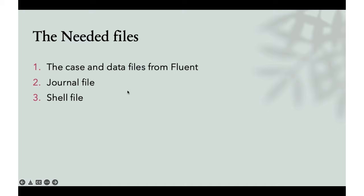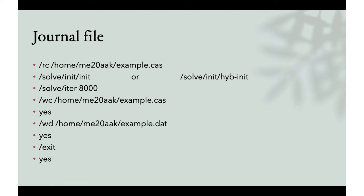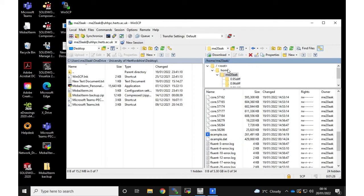That's the first and easiest step: the case and data files. Next is something called the journal file. The journal file contains the commands you give ANSYS Fluent to initialize or start your case and then write the resulting data or case. The first command is 'rc' which stands for Read Case, and then you provide the file path — home, then your username, then the name of the file you're going to use.